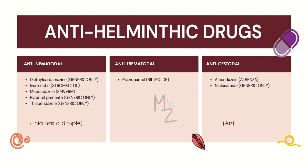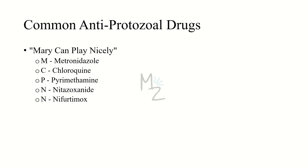Infections caused by trematodes are treated with just one drug: praziquantel. For anti-cestodal drugs — effective against cestode infections — the drugs are albendazole and niclosamide. The mnemonic is simply 'NA': A is for albendazole and N is for niclosamide.